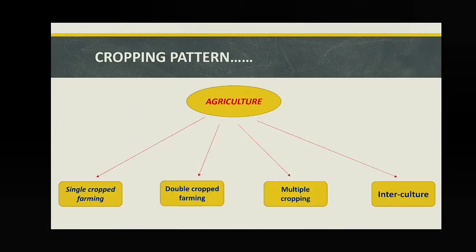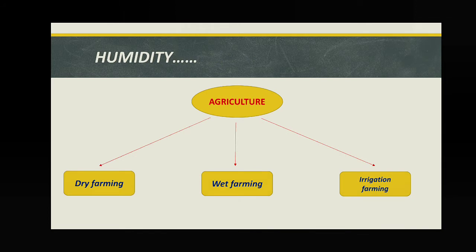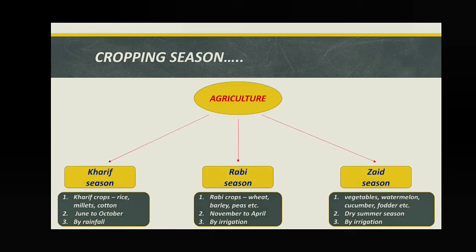Good morning students. Today we will discuss topics related to Chapter 4, Agriculture. In the last class, we discussed crop types, types of farming based on cropping pattern — single crop, double crop, multiple cropping, and interculture. We also discussed types of farming based on humidity and water availability: dry farming, wet farming, and irrigation farming.